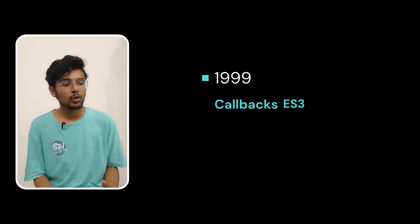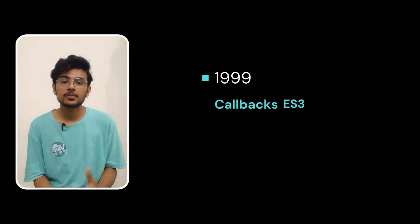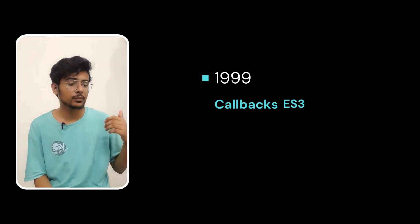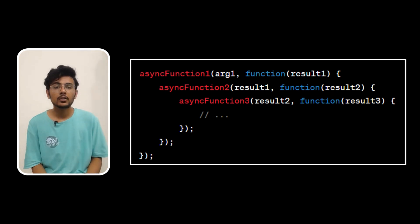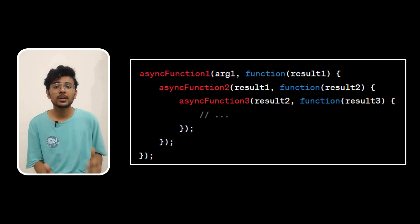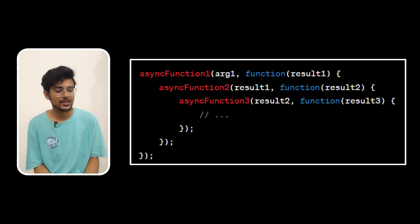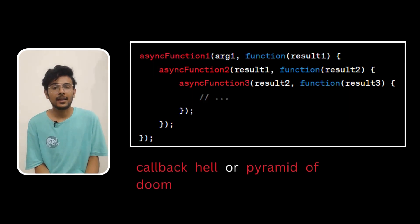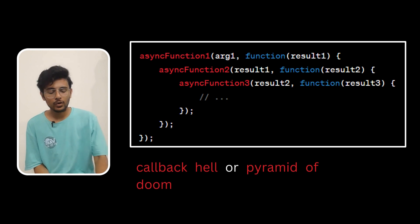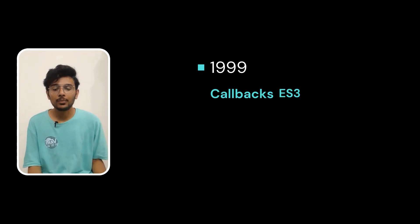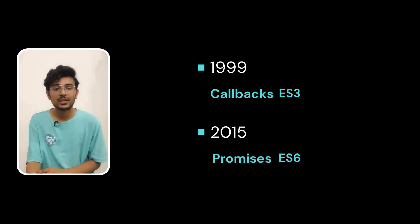Callbacks are functions that are passed as parameters to a function, and they generally form a deeply nested structure. The problem with this structure is that as you move from top to bottom, it becomes really hard to understand the code. This structure has even been given a name — generally referred to as callback hell or pyramid of doom.